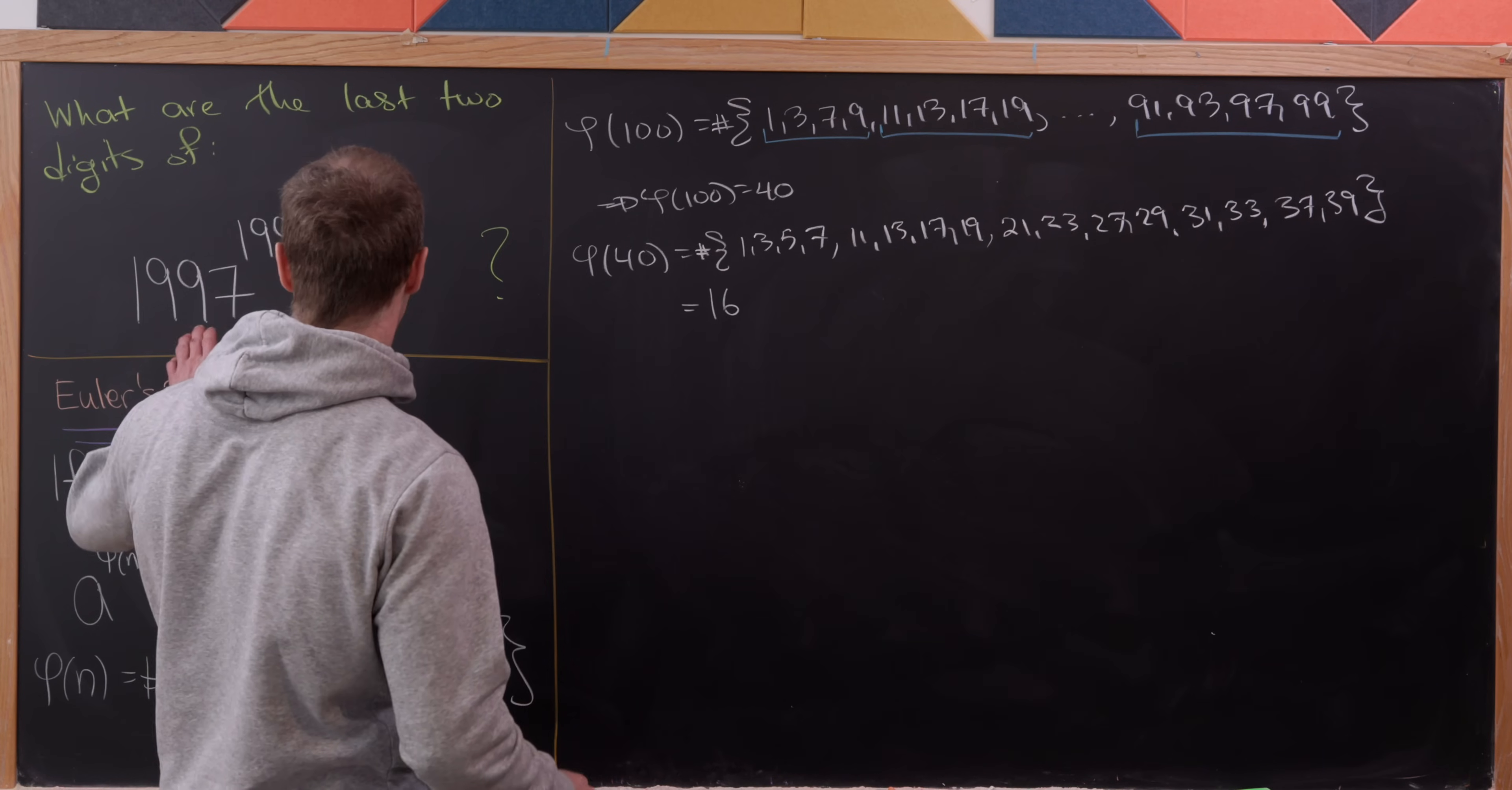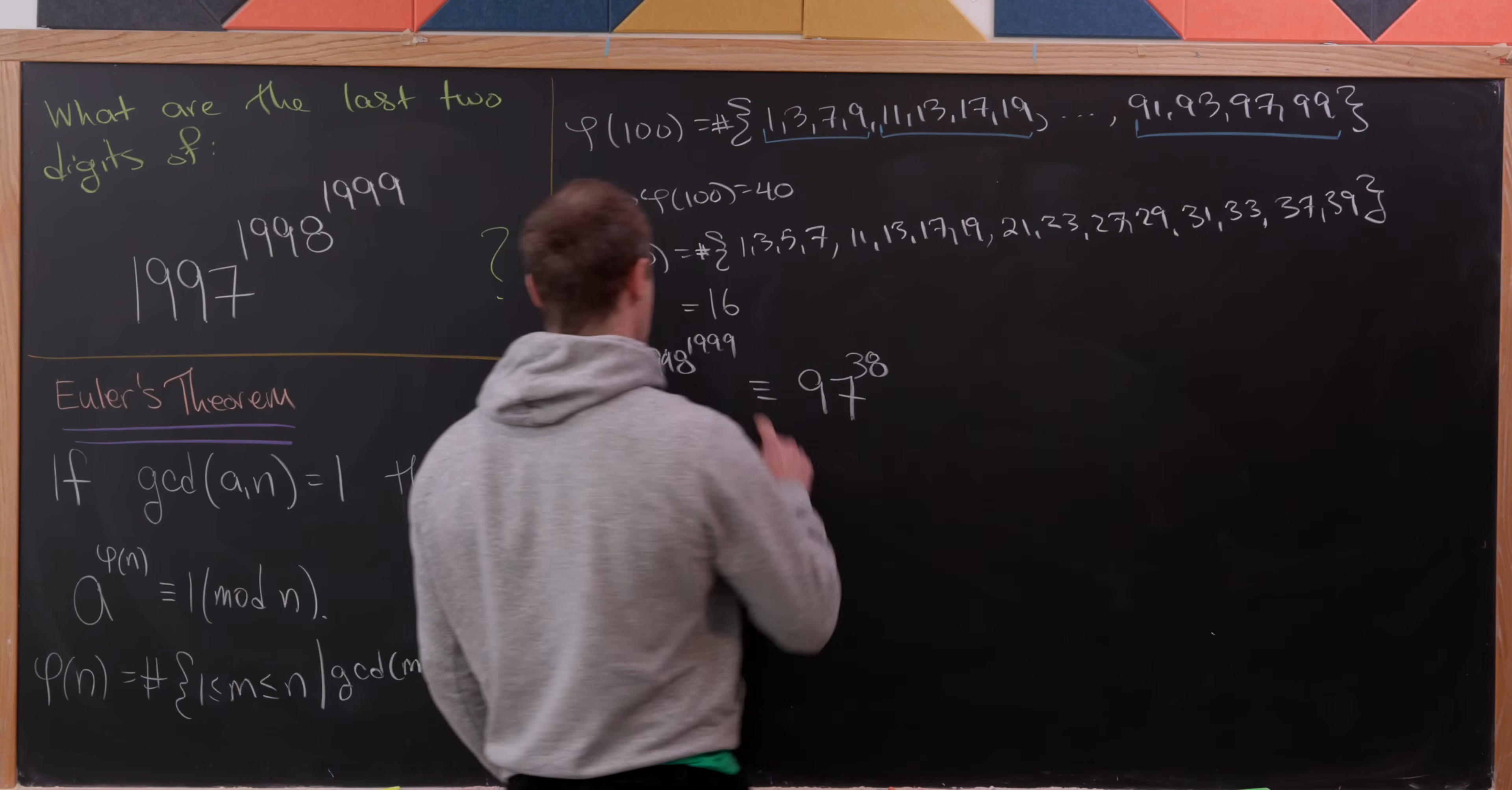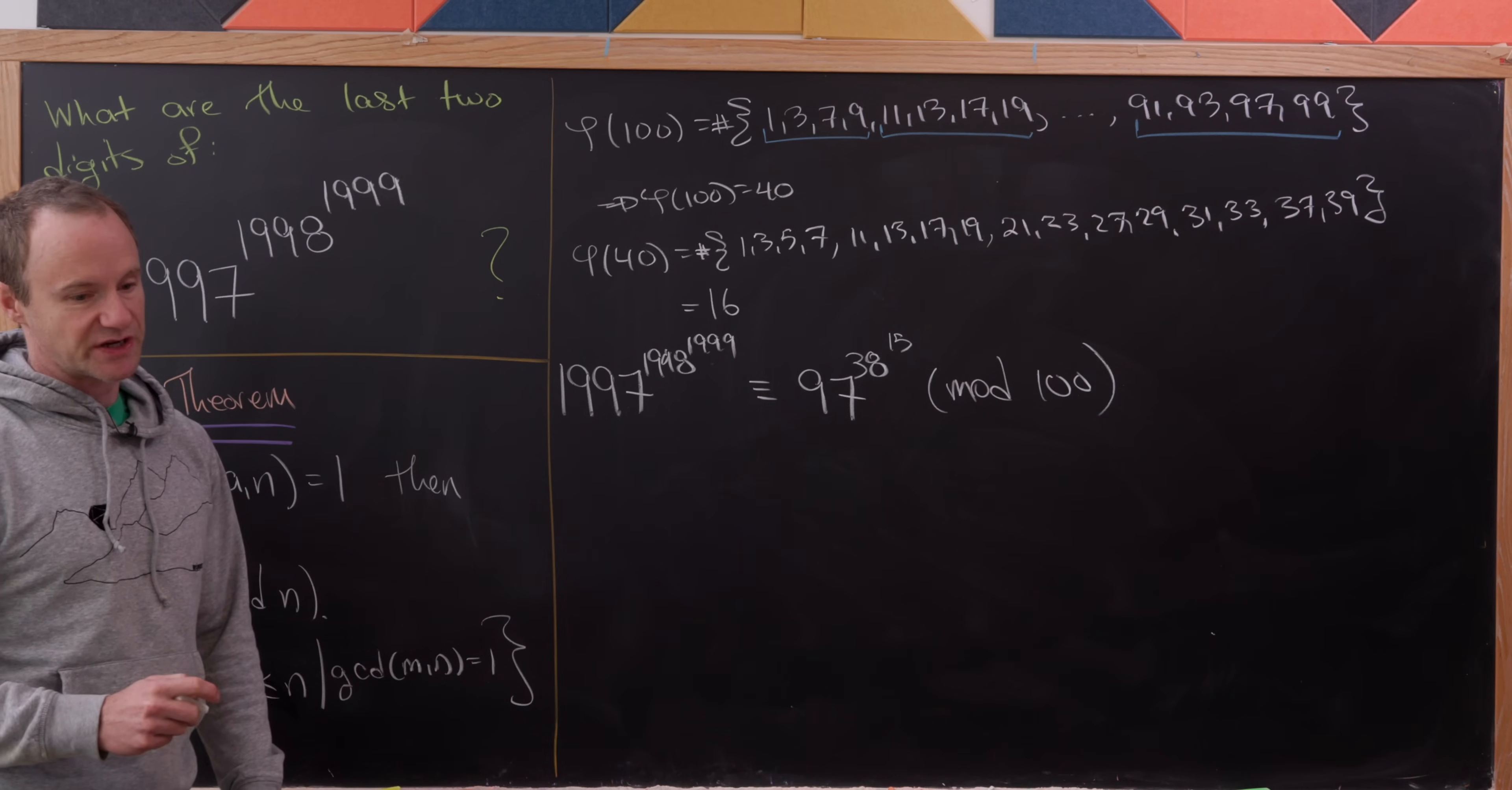Like I said, that means we're going to reduce this biggest exponent mod 16, this middle exponent mod 40, and this base here mod 100. In other words, we're going to have 1997 to the 1998 to the 1999 is congruent to 97 to the power... that's going to be 38 because we're reducing 1998 mod 40, that's 38 more than 1960. And 1999 is 15 modulo 16. So that's our initial reduction here.